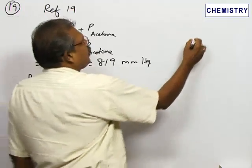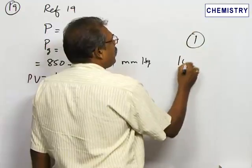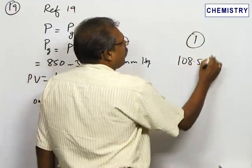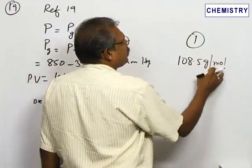This is given by option 1: 108.5 gram per mole. Molecular mass unit is gram per mole.